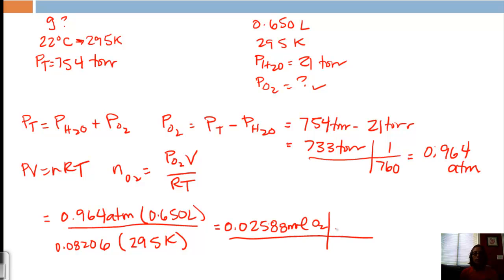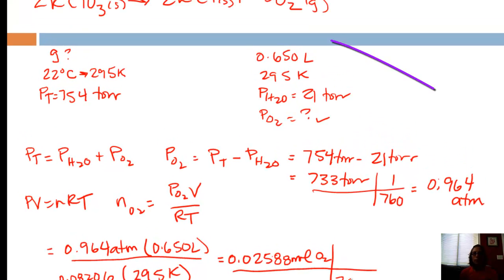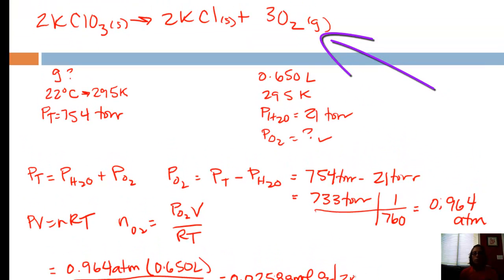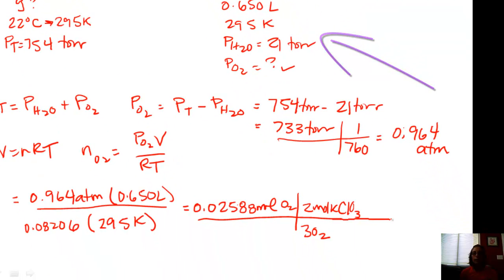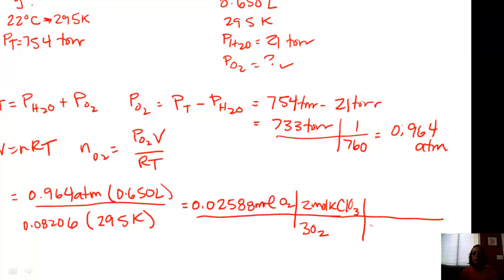So now let's convert to KClO3. Well, first of all, I know that for every 3 moles of O2, there are 2 moles of KClO3. And then if I want to get to grams, I need molar mass. I know for every 1 mole of KClO3, there are 122.55 grams. So that's just taking all your atomic masses and adding them together. If you calculate this out, you get 2.11 grams of KClO3. And that's your answer.